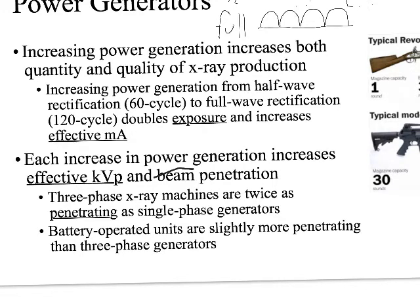Battery-operated portable x-ray machines are slightly more penetrating than even three-phase generators. It used to be that using a portable machine required reducing KVP a little because it was more powerful than the department machine. Now that's not really the case — most departments have state-of-the-art equipment. Since a battery-operated machine uses direct current, there's no need to change phases.